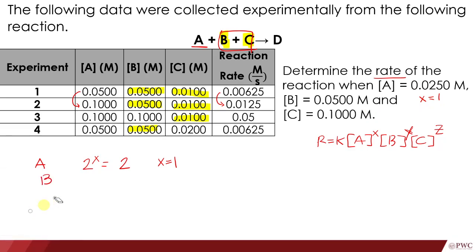Let's proceed to B. Since our focus is on B, the other reactants A and C must be held constant. Let's look at the experimental data where A and C are both constant at the same time. A is constant on experiment 2 and 3, and also on experiment 1 and 4. C is constant on experiment 1, 2, and 3. So A and C are both constant at the same time on experiments 2 and 3 — we'll use those.